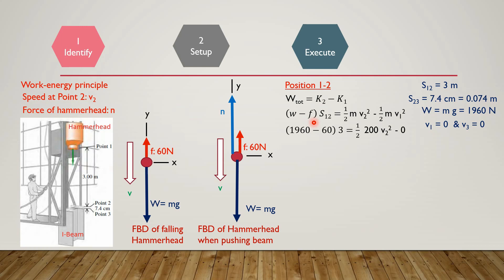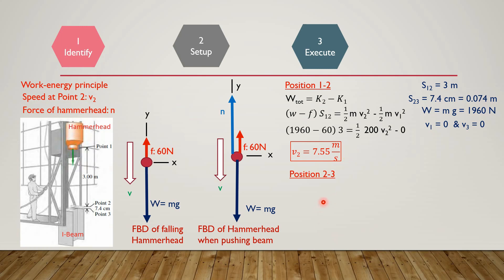The distance between 0.1 and 0.2 is 3 meters, mass is 200 kg, V1 = 0, and the result for the K1 term is 0. In this equation only V2 is unknown. After simplification, the velocity V2 equals 7.55 meters per second. This is the first target variable calculated.